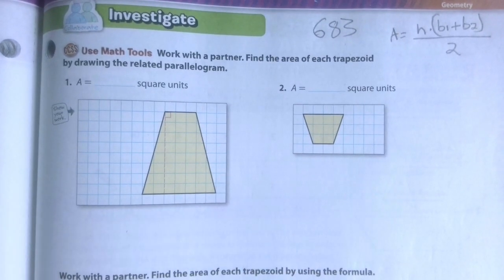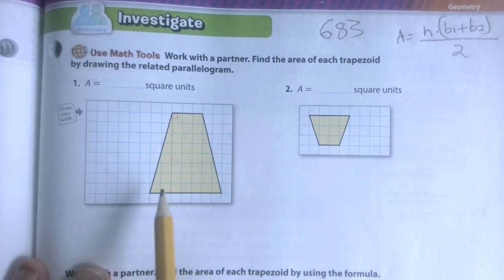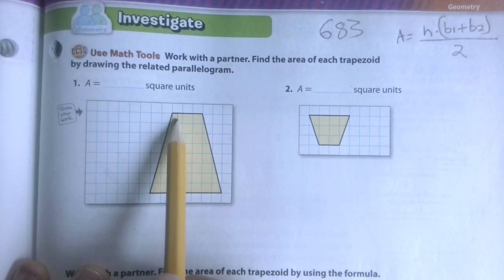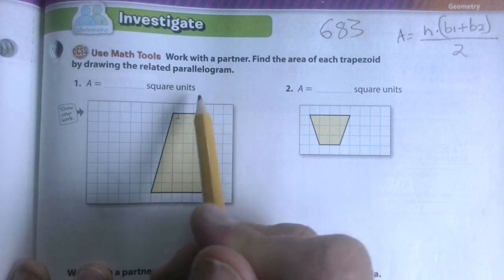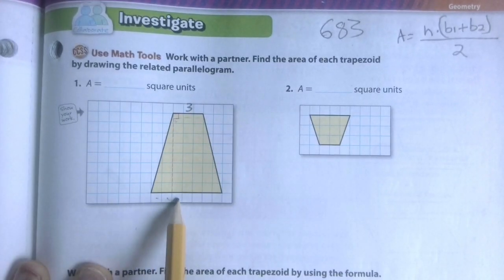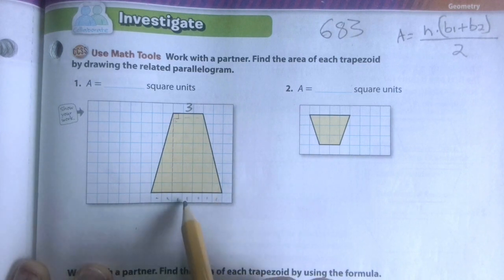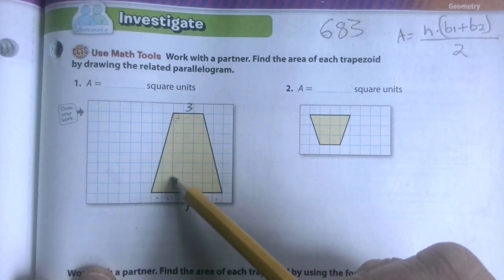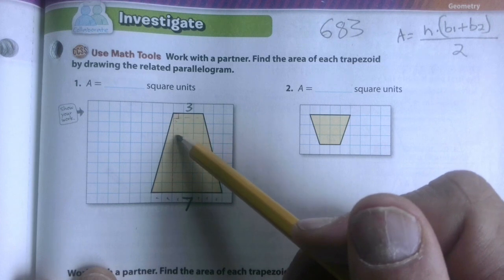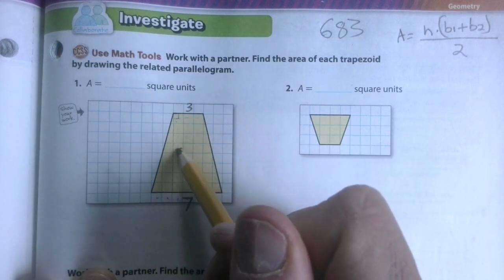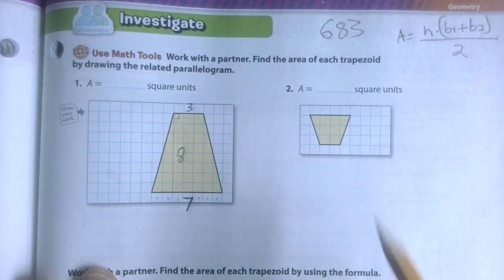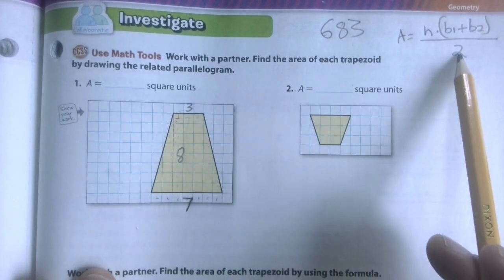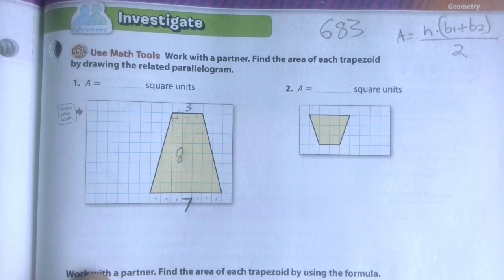Let's look at number one on page 683. Base one up here is one, two, three — so a length of three. The bottom base is one, two, three, four, five, six, seven — a length of seven. Now we find the height: straight up and down, one through eight — the height is eight. Now find the area using base one plus base two times the height, divided by two.